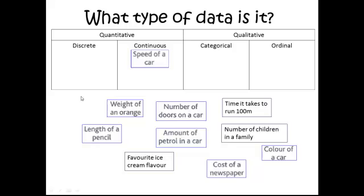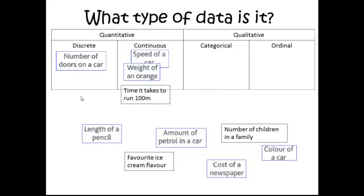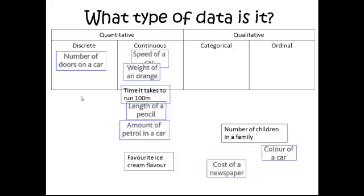Okay, let's take a look at the answers. Weight of an orange, that's something that you measure so that's continuous data. The number of doors on a car, that would be discrete because that would be something that is counted. The time it takes to run 100 meters, time is something measured, that's continuous data. The length of a pencil, also measured, so continuous data. Amount of petrol in a car, again continuous.